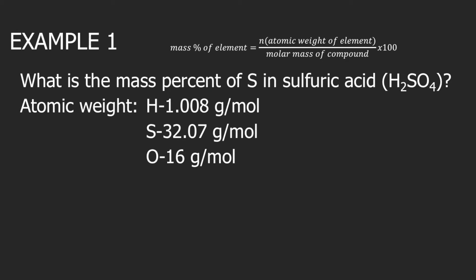Let's answer Example 1. What is the mass percent of sulfur in sulfuric acid? The chemical formula is H₂SO₄. The first thing we need to do is to compute the molar mass of the compound, H₂SO₄.